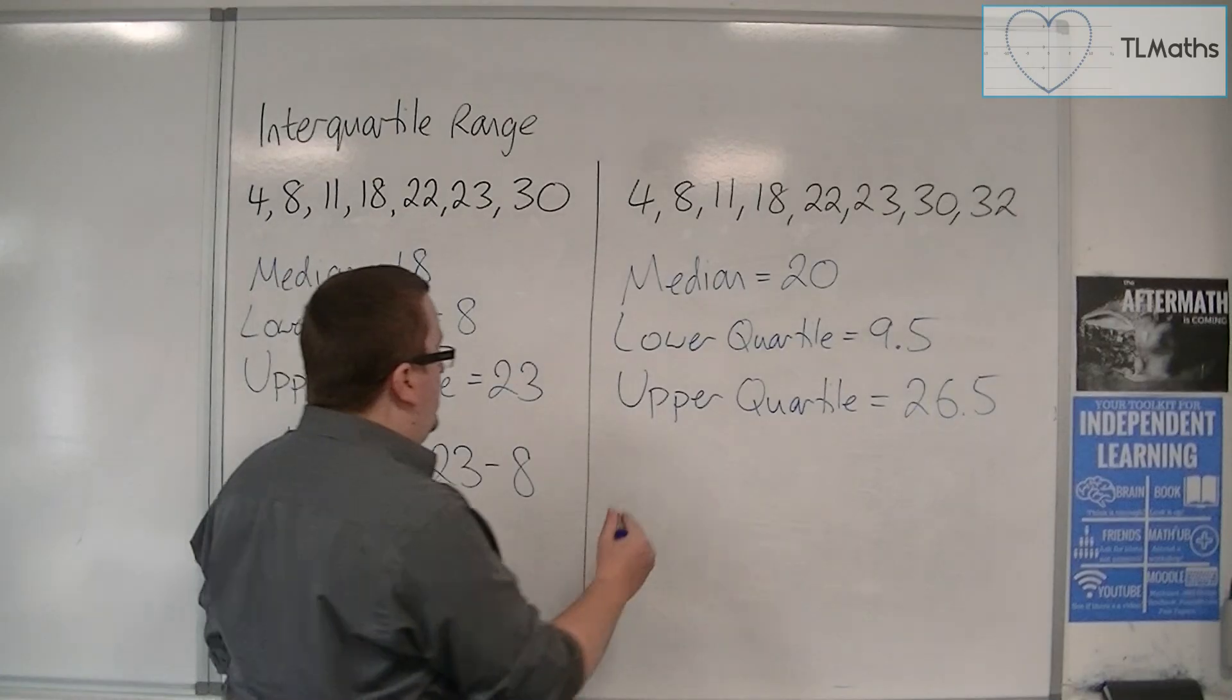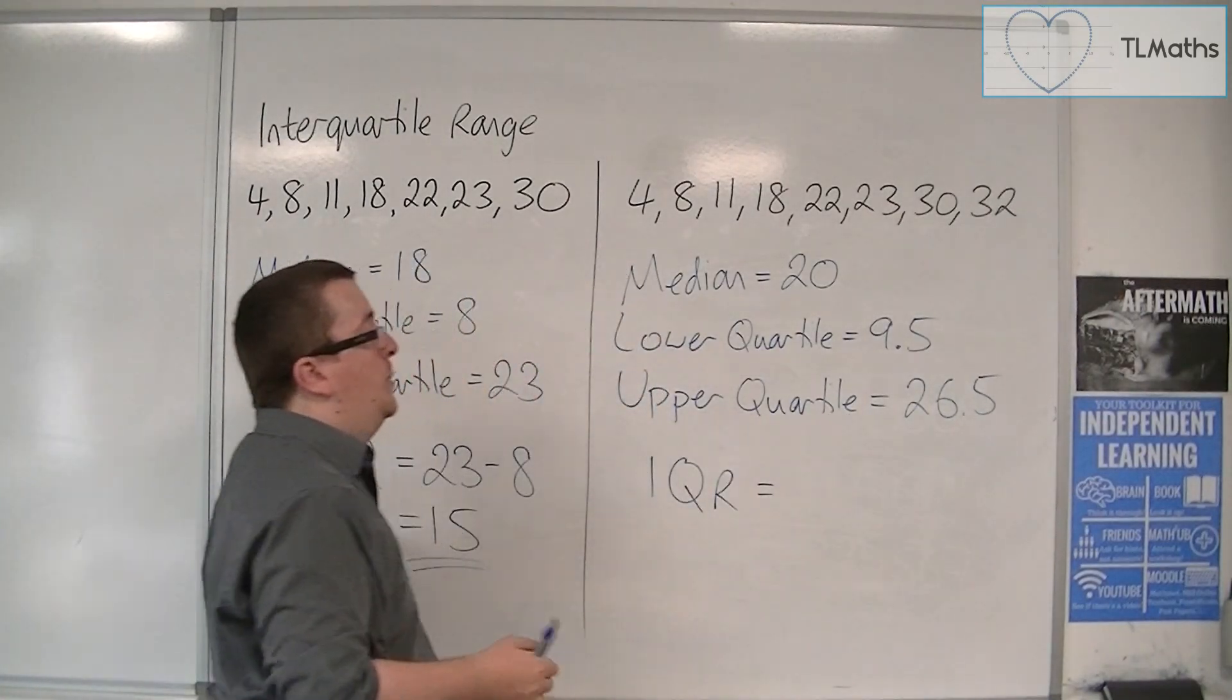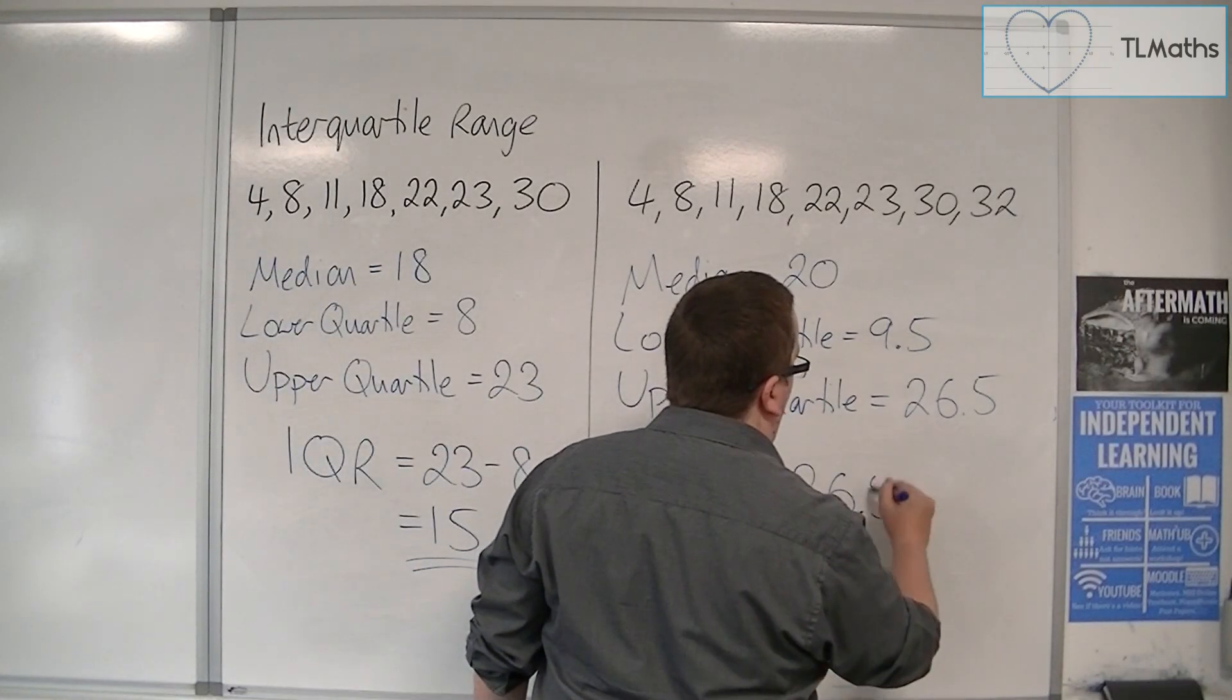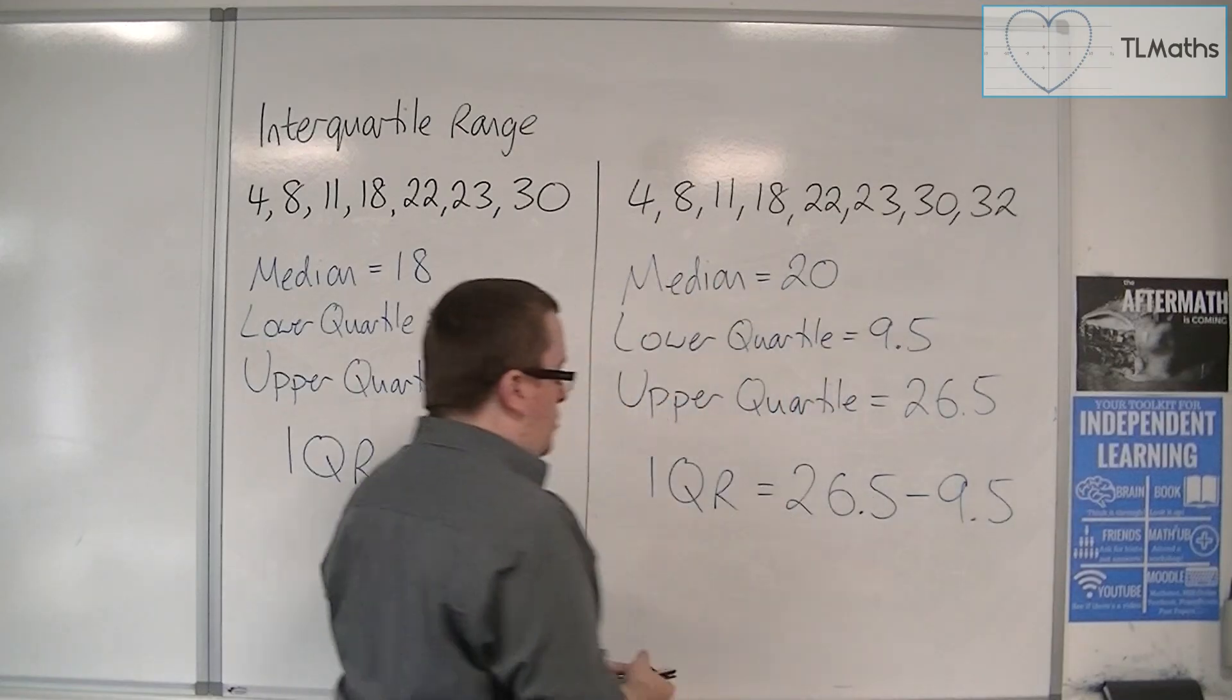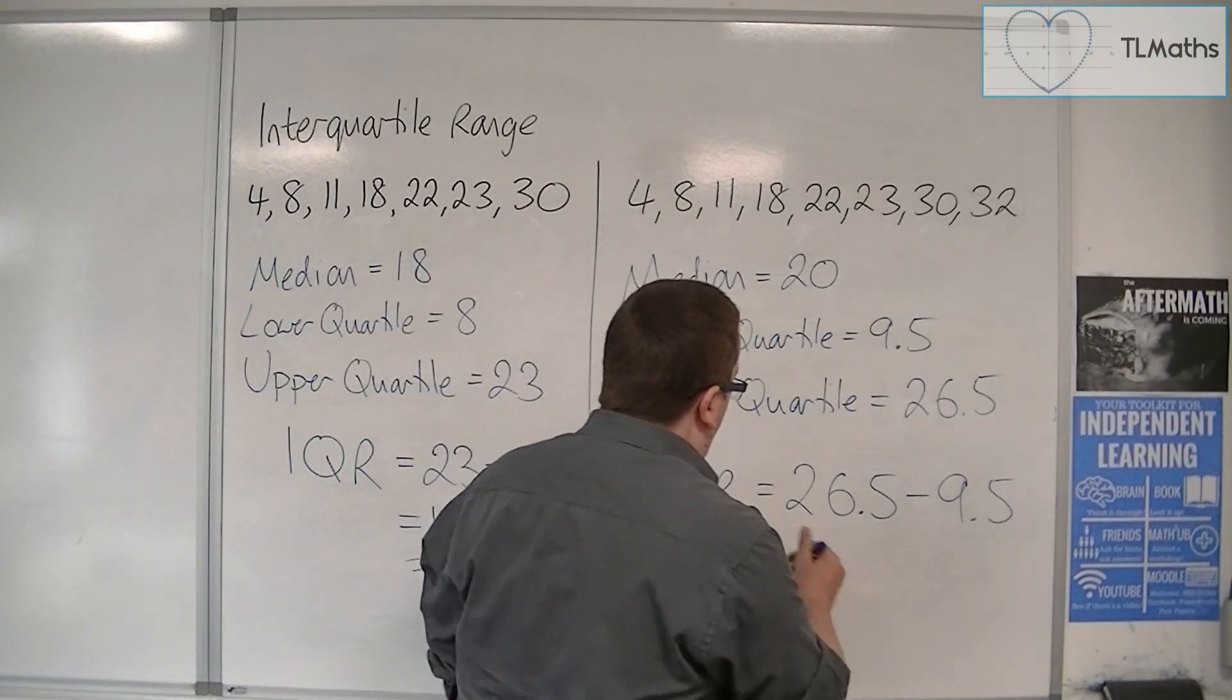For this set of data, we have our upper quartile as 26.5 and our lower quartile as 9.5. So 26.5 take away 9.5 gives us 17.